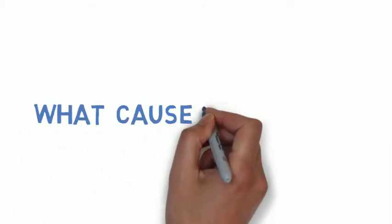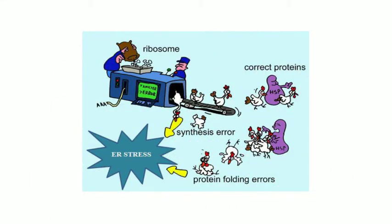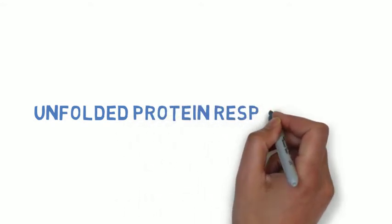Any disruption in the previously stated roles would lead to ER stress. The most common cause of ER stress is due to the disruption of protein folding. When there are mutant or unfolded proteins inside the ER, a stress response occurs. This response is called unfolded protein response, or UPR.